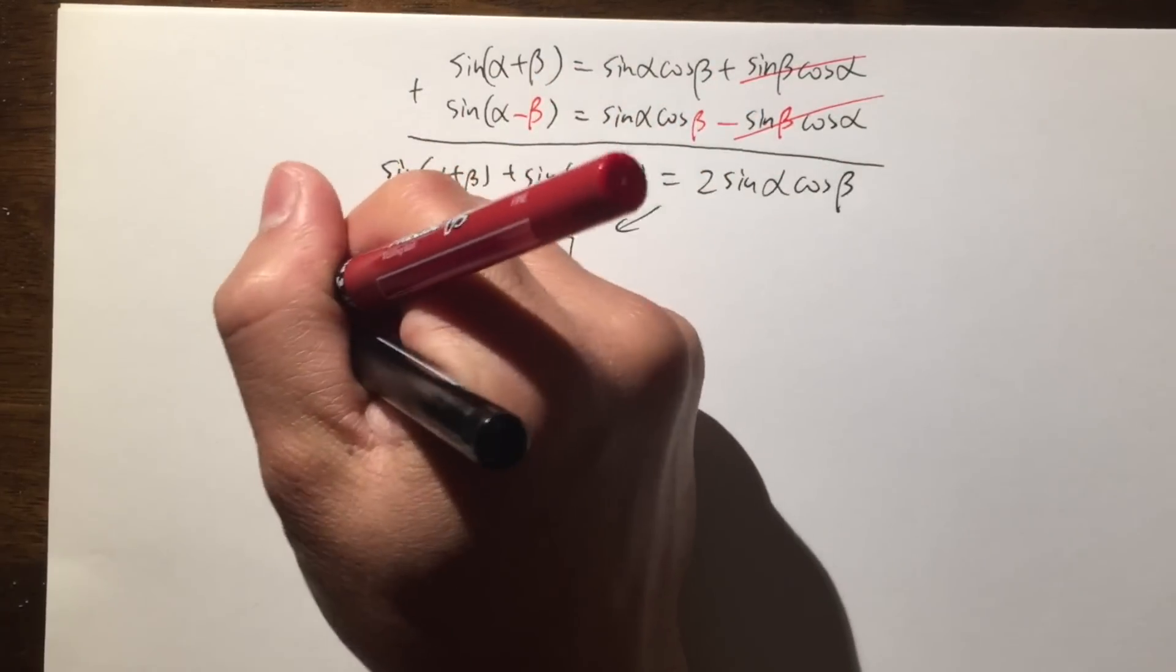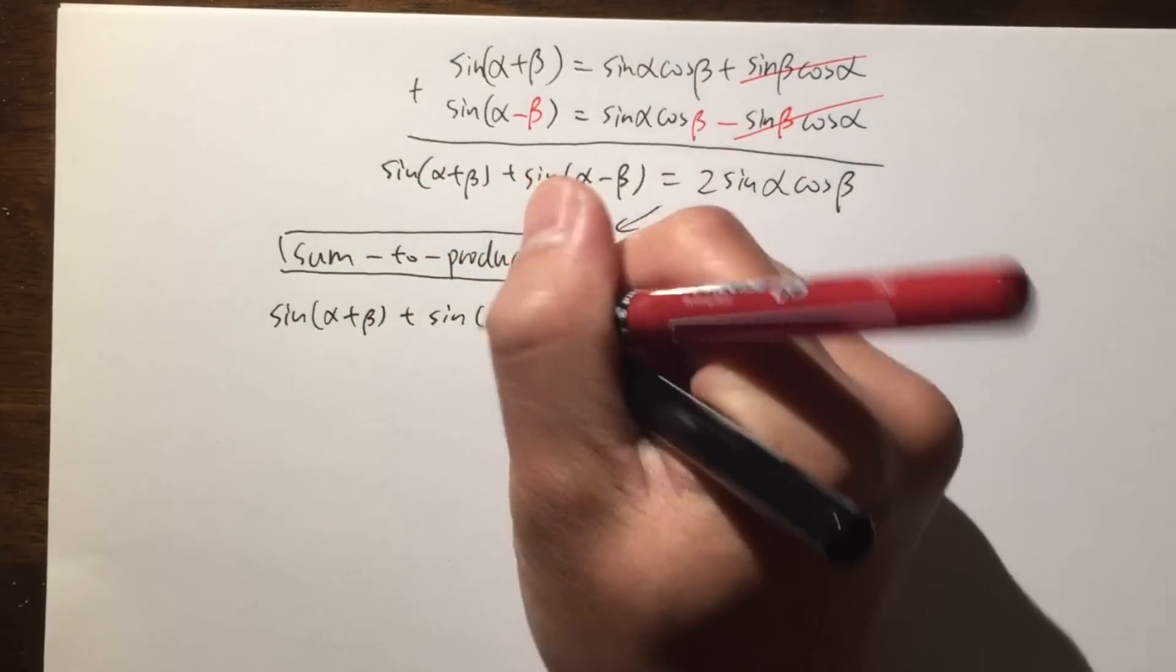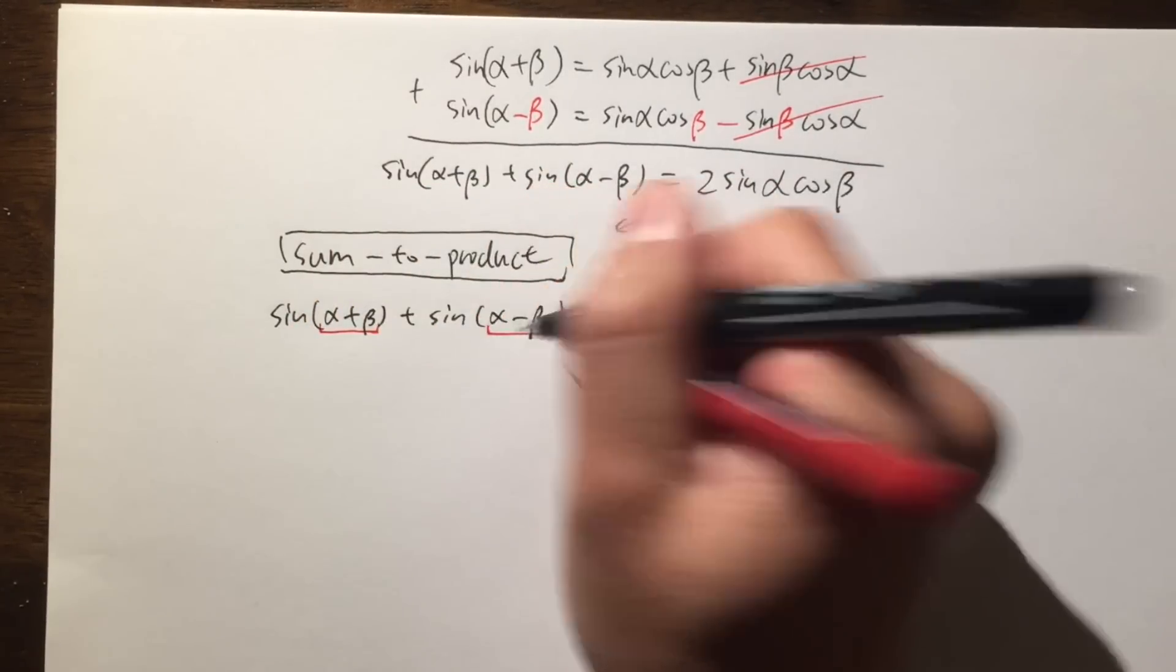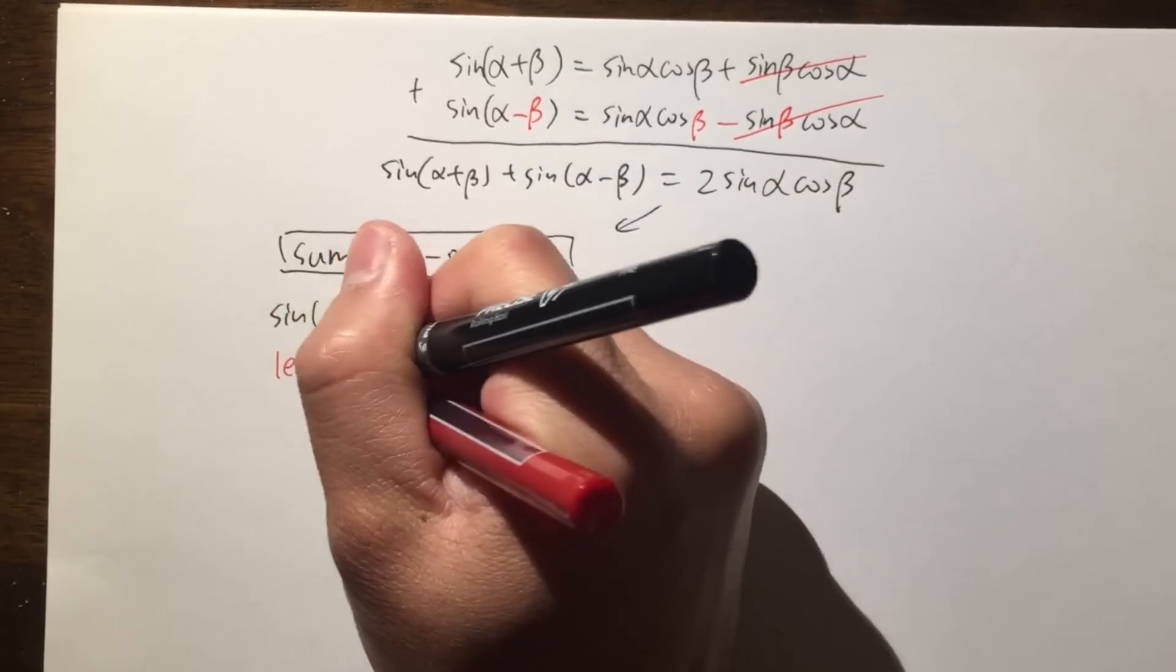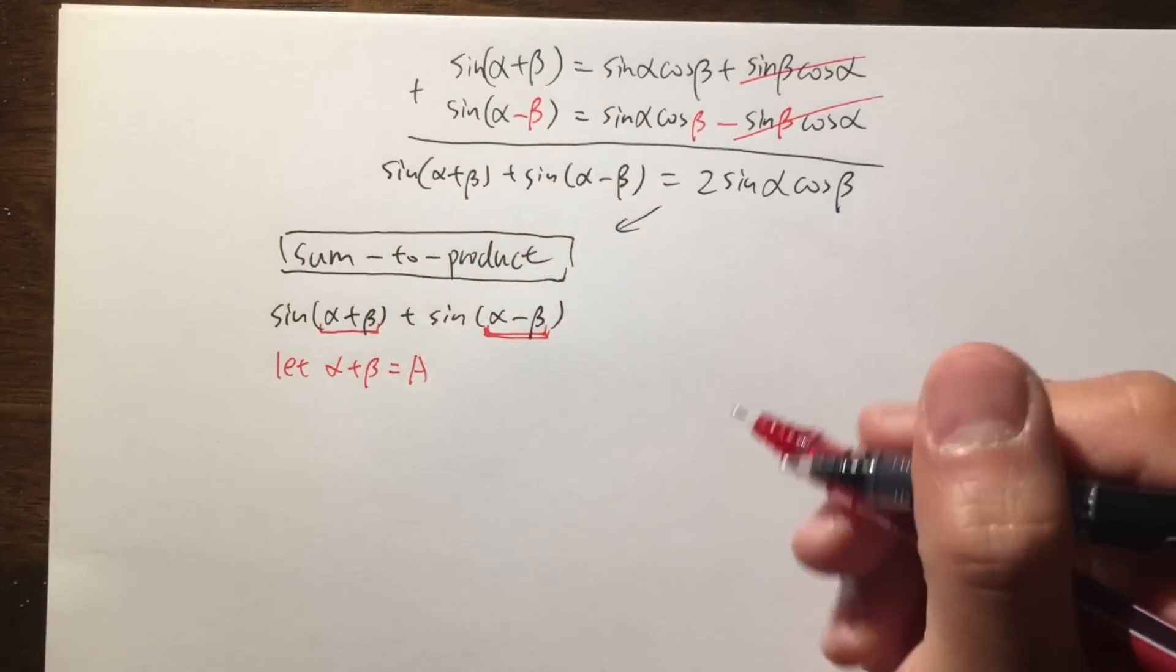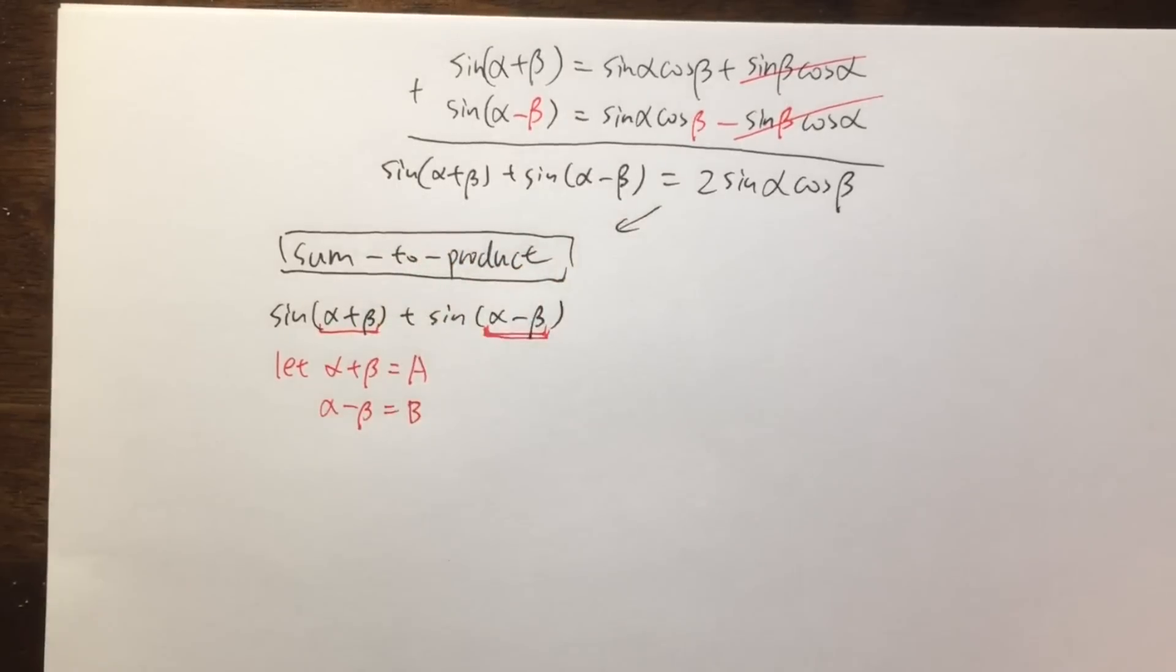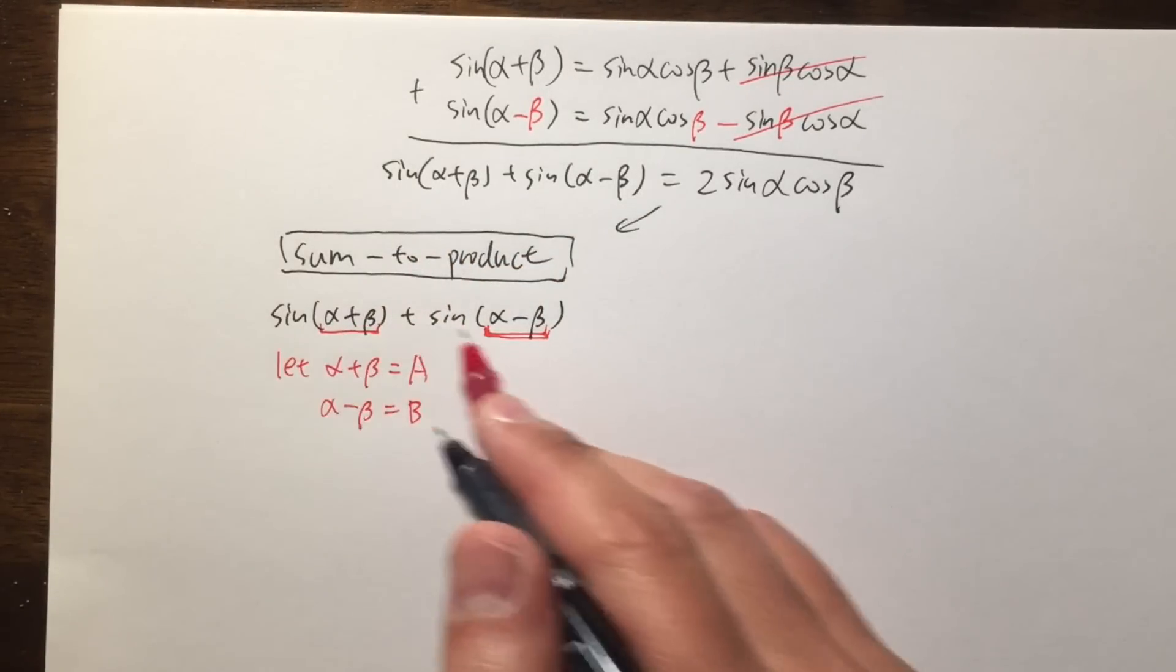Anyway, let's look at this right here first. Let me rewrite this down again. When we have sine of alpha plus beta plus sine of alpha minus beta. Okay, this is an angle. This is another angle. What we're going to do is, we are going to let this right here to be another variable. I will just call that to be capital A. Likewise, I will call this to be another variable. I will call that to be capital B.